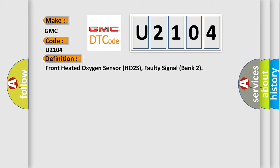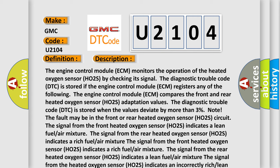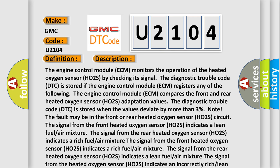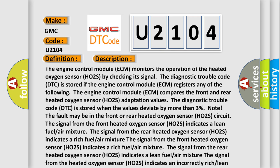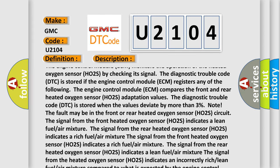And now this is a short description of this DTC code. The engine control module ECM monitors the operation of the heated oxygen sensor HO2S by checking its signal. The diagnostic trouble code DTC is stored if the engine control module ECM registers any of the following.